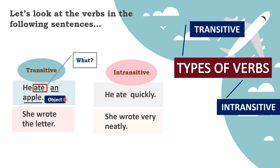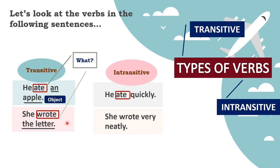Now look at the intransitive column. When you ask 'what?' after 'ate,' you are not getting an answer - the action ends with the verb. For transitive: 'She wrote the letter' - you ask 'what?' after 'wrote' and get 'the letter,' which is an object. In the transitive column, the action passes on to an object; in the intransitive column, the action does not pass to an object.